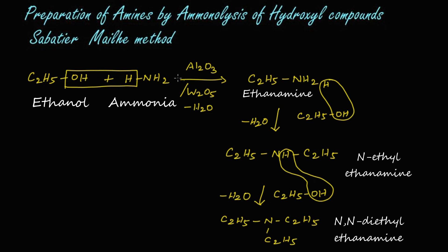Let's summarize the reaction. When vapors of ethanol and ammonia are passed over alumina, W₂O₅, or silica at a temperature of 400°C, all types of amines — primary, secondary, and tertiary — are formed. This method is also known as the Sabatier Mahi method.